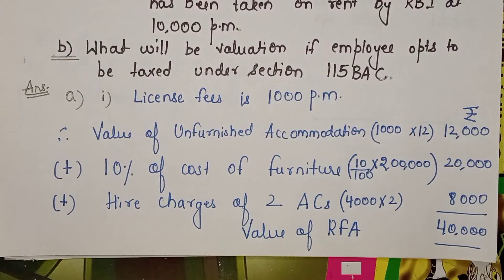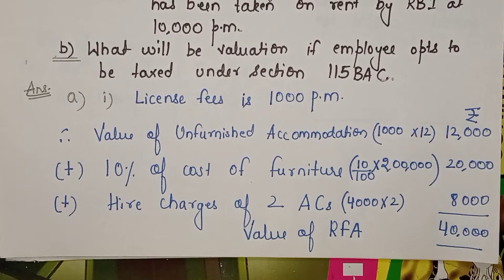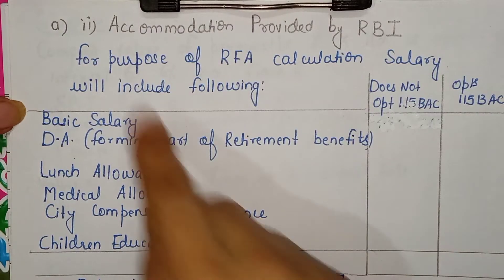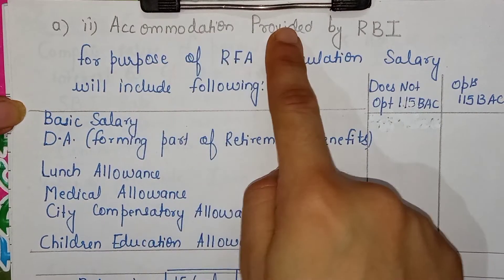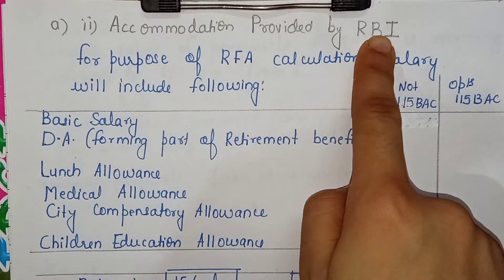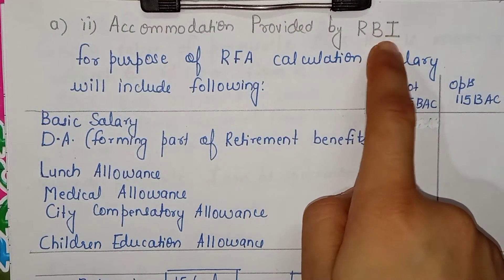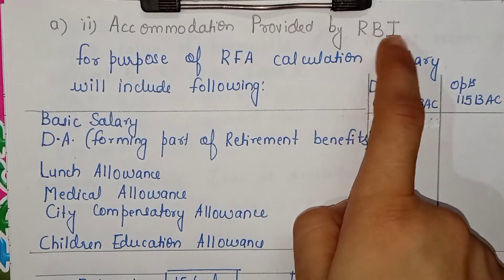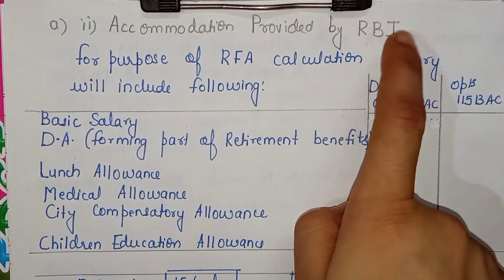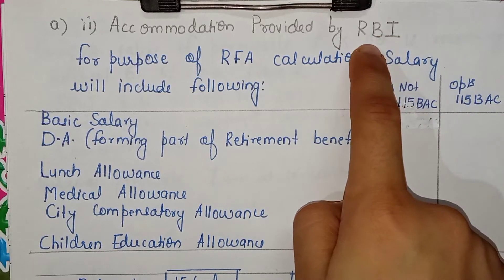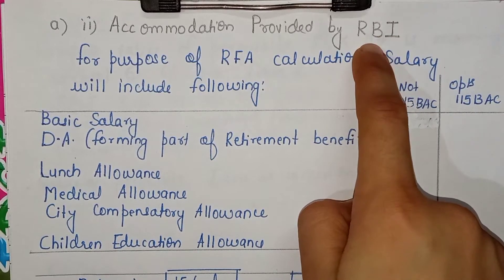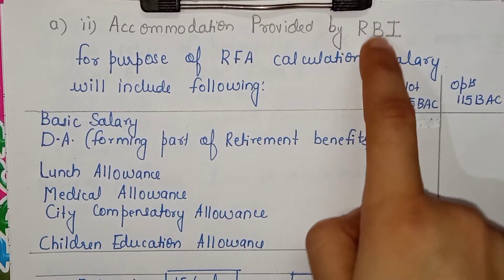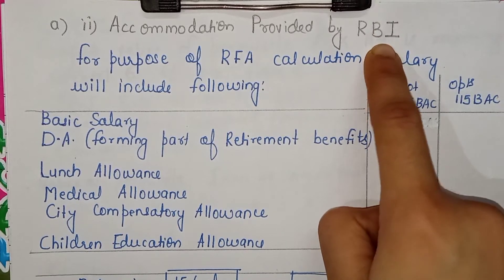Now let's talk about the second part — accommodation provided by RBI. The facts are the same, but here it is an RBI employee, not a government employee. We treat this under the other employee category.